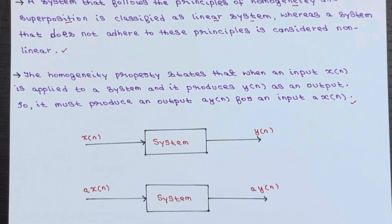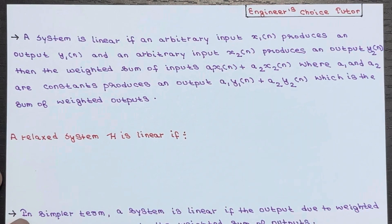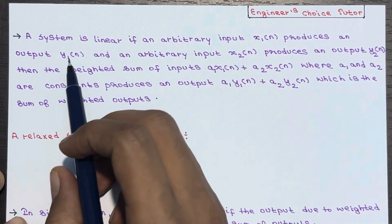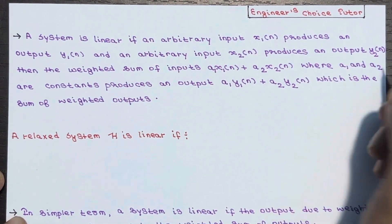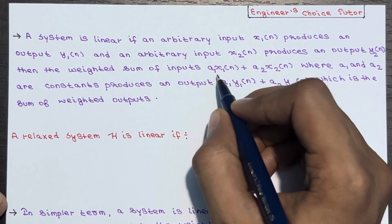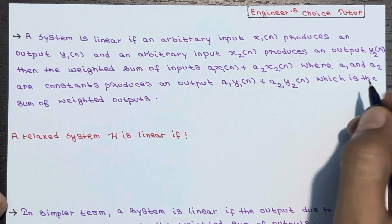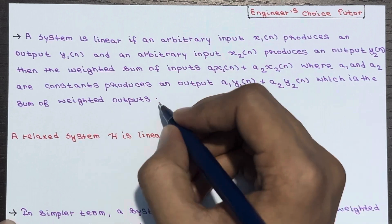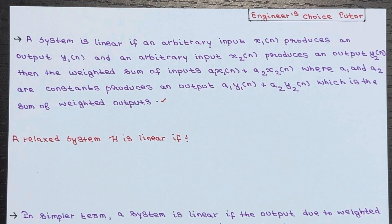A system is linear if an arbitrary input x1(n) produces output y1(n) and x2(n) produces output y2(n), then the weighted sum of inputs — a1·x1(n) plus a2·x2(n), where a1 and a2 are constants — must produce an output a1·y1(n) plus a2·y2(n), which is the weighted sum of outputs. This definition is based on the two properties we just covered.